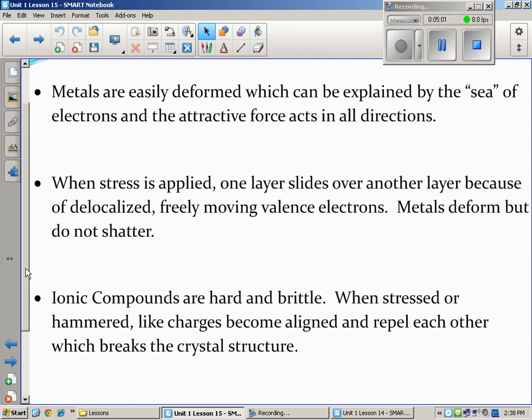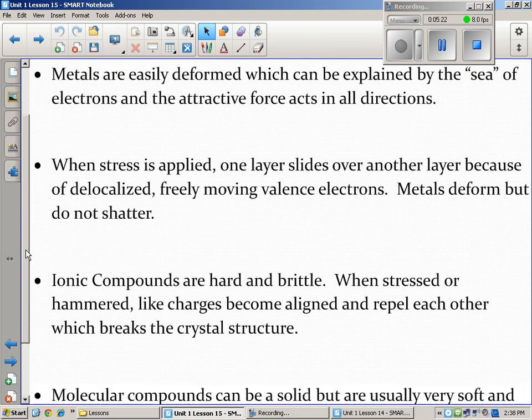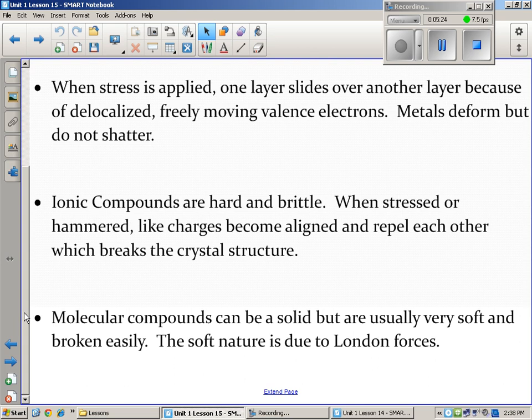And some things you could kick, like steel, you can kick that. That's not going to bend or dent. That's really strong. Sticks together really well. So obviously it depends on the metal that we're talking about, but they can deform. When stress is applied, one layer slides over another because of delocalized freely moving valence electrons. Metals deform but they don't shatter. So they're able to bend out of the way like that.